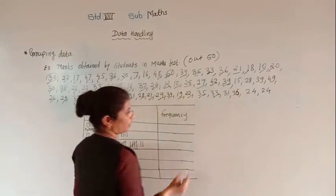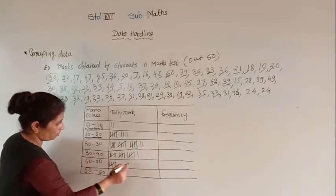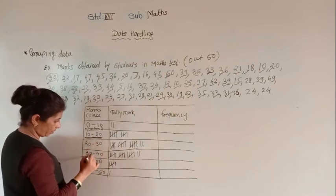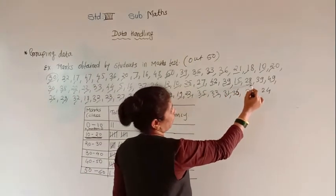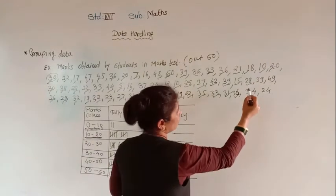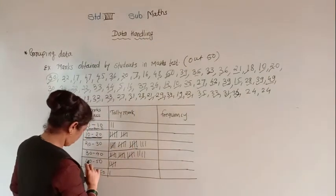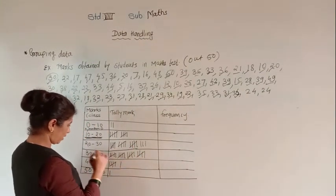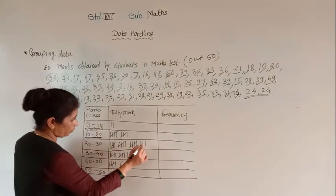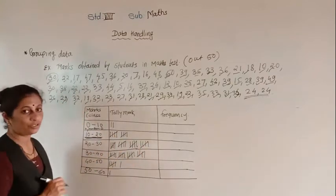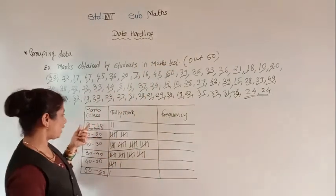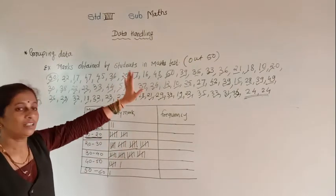39 in 30 to 40, 33 also in 30 to 40. 15 in 10 to 20, 31 in 30 to 40. 26 and 28 — 28 in 20 to 30, 36 in 30 to 40. 39 in 30 to 40, 49 in 40 to 50. 42 and 50 — 50 goes to the extra class. Remaining 24 and 24 both go in 20 to 30. The data is given in such a manner that it is not possible to write individually, so we have to make groups and arrange marks this way.